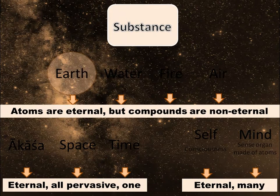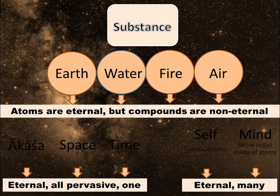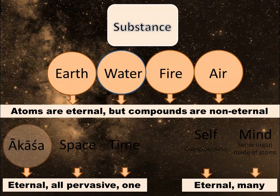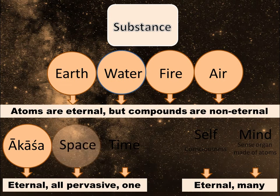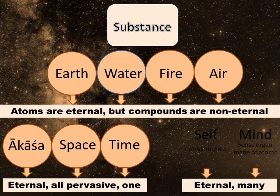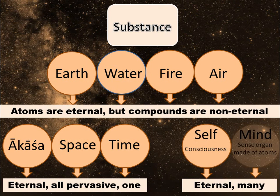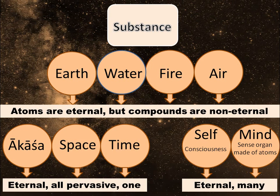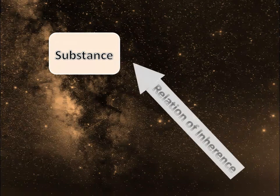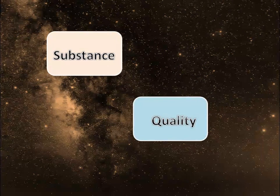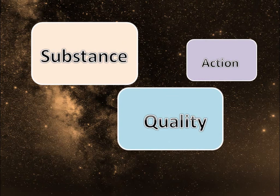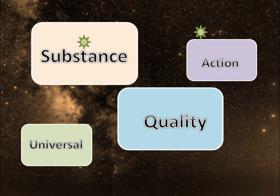Substance has nine categories. Earth, Water, Fire, and Air have atoms that are eternal but the compounds are not. Akasha is a substratum of sound. Space and time are eternal and each of these categories is a unity. Self and mind are eternal but are many. All substances possess quality, but not all substances possess action. By relation of inherence, all substances possess qualities.